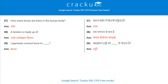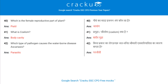How many bones are there in the human body? 206. A tendon is made up of only collagen fibers. Ligaments connect bone to bone. Which is the female reproductive part of a plant? Pistil.